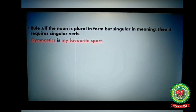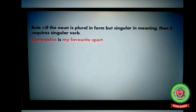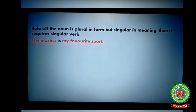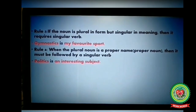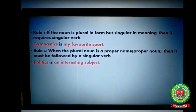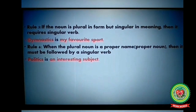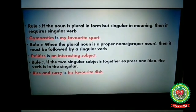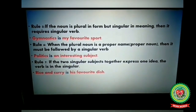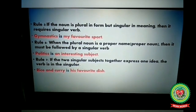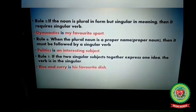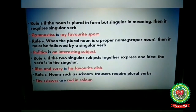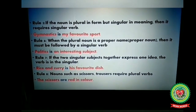Five: if the noun is plural in form but singular in meaning, it requires a singular verb — for example, 'Gymnastics is my favourite sport.' Six: when a plural noun is a proper name or proper noun, it must be followed by a singular verb — for example, 'Politics is an interesting subject.' Seven: if two singular subjects together express one idea, the verb is singular — for example, 'Rice and curry is his favourite dish.' Eight: nouns such as scissors and trousers require plural verbs — for example, 'The scissors are red in colour.'